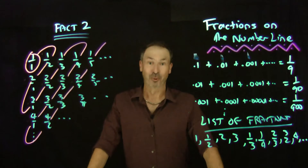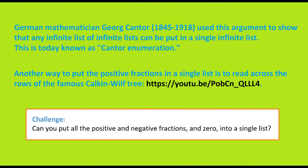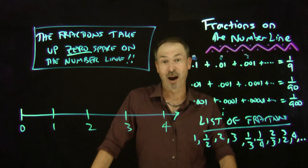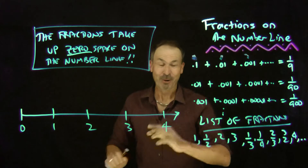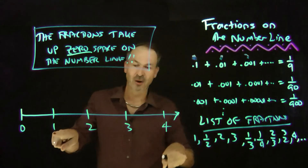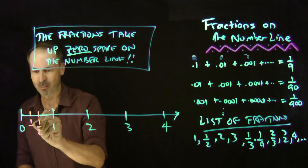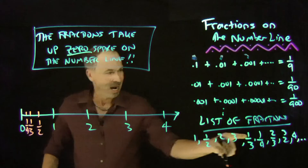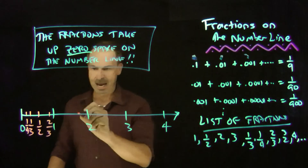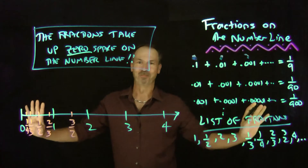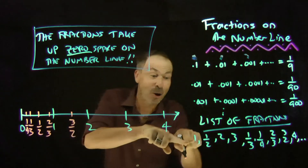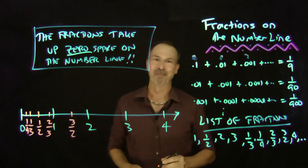Two facts done. Now we're ready to prove the main result: the fractions take up zero amount of space on the number line. Recall we can write all the positive fractions in the list. 1 is the first fraction, a half is the second, then 2, then 3, then 1 third, then 1 fourth, then 2 thirds, then 3 halves, then 4, and so on. Every fraction on the number line is marked here because every fraction appears in this list.